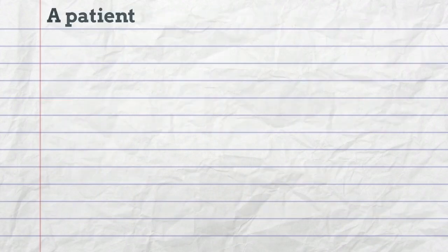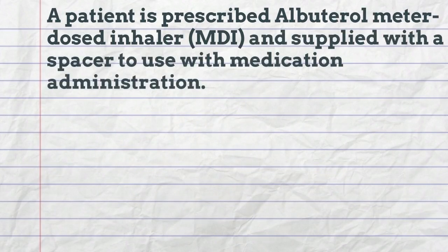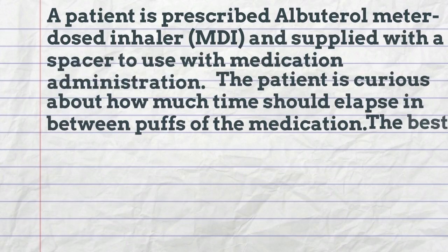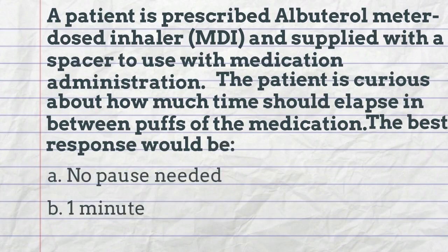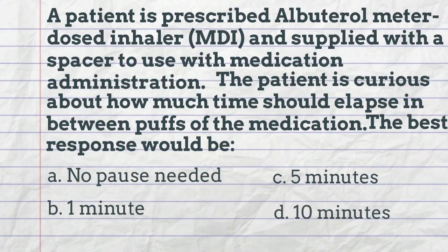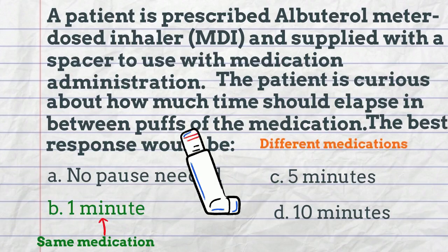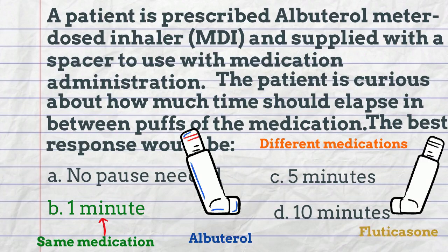A patient is prescribed an albuterol metered dose inhaler and supplied with a spacer to use with medication administration. The patient is curious about how much time should elapse between puffs of the medication. The best response would be: no pauses needed, 1 minute, 5 minutes, or 10 minutes. When delivering inhalations of a metered dose inhaler of the same medication, 1 minute between puffs is ideal. When delivering inhalations of two different medications — for example, albuterol and then the corticosteroid fluticasone — the patient should wait 5 minutes between the last inhalation of albuterol and the first inhalation of the second medication, fluticasone.